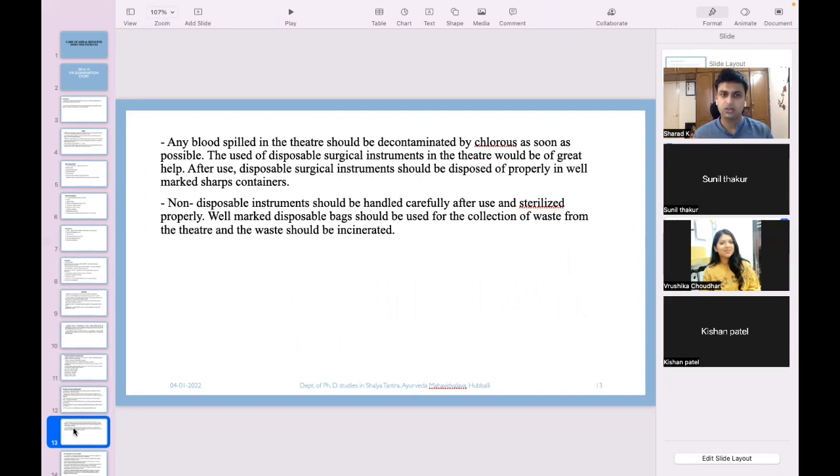For wound drainage, closed apparatus should be used where there will not be spillage of blood or serum. Any blood spilled in the operation theater should be decontaminated by chlorine as soon as possible. Usage of disposable surgical instruments would be of great health. It will increase the cost of surgery but will be very safe for staff and patient. After use, disposable surgical instruments should be disposed properly in well-marked sharp containers. Non-disposable instruments should be handled carefully and properly sterilized and put into UV cabinet. Well-marked disposable bags should be used for waste collection and the waste should be incinerated. We have to finally burn it, otherwise there is possibility of spreading the disease.